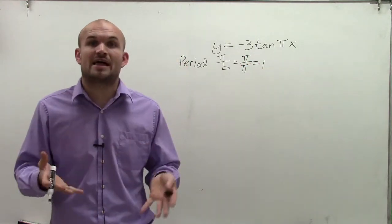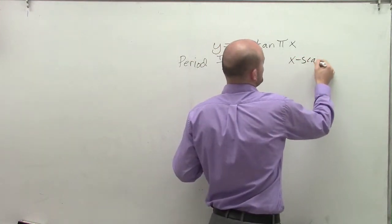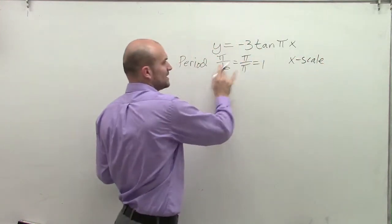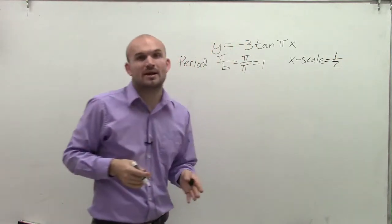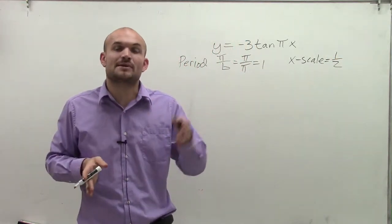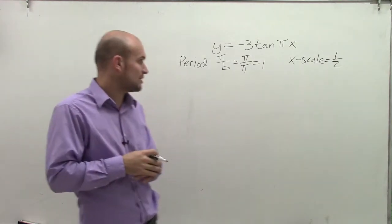Now the next thing we're going to do is evaluate the x scale. To find the x scale, I'm going to take my period and divide it by 2. Therefore, my x scale is 1 half. That means the distance between all my critical points of my tangent graph are going to be 1 half away from each other.